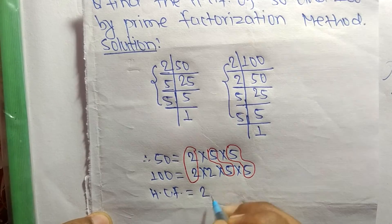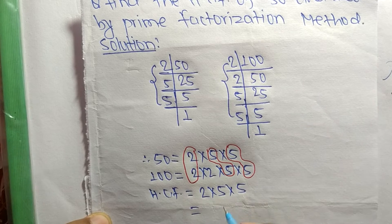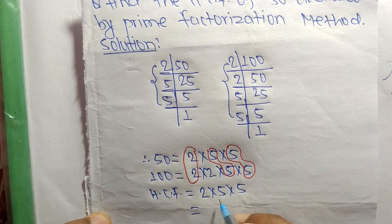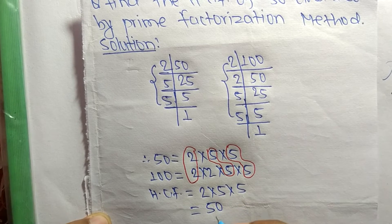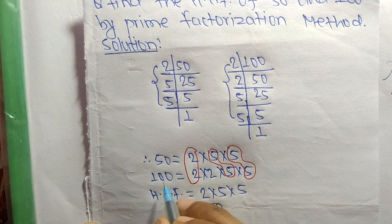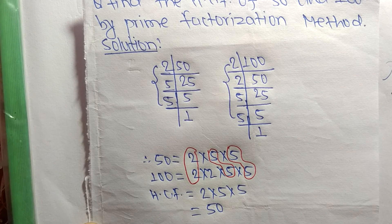The common factors are 2, 5, and 5. So 2 times 5 equals 10, and 10 times 5 equals 50. Therefore, 50 is the HCF of 50 and 100. Thanks for watching.